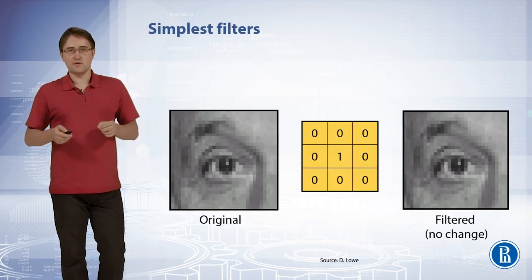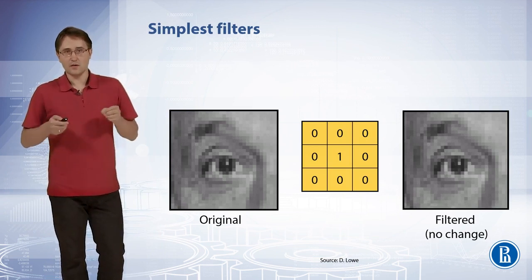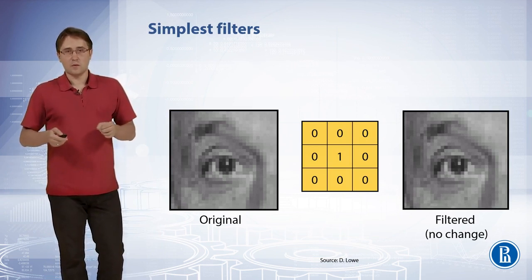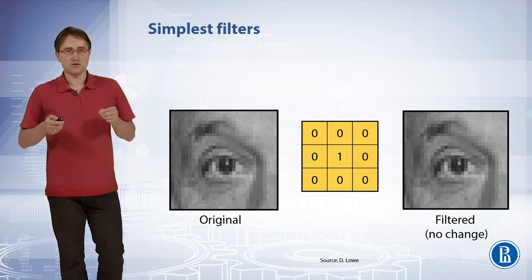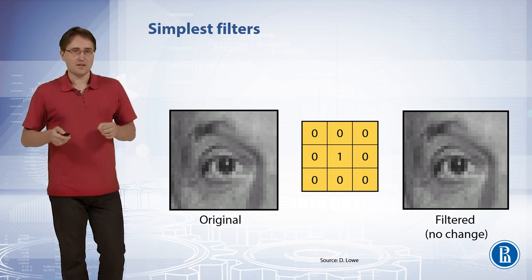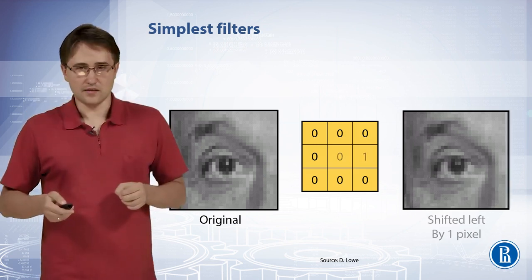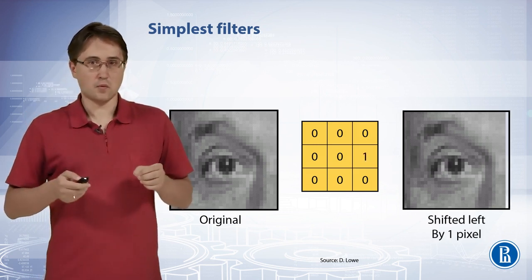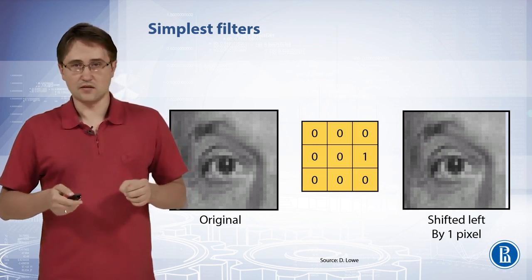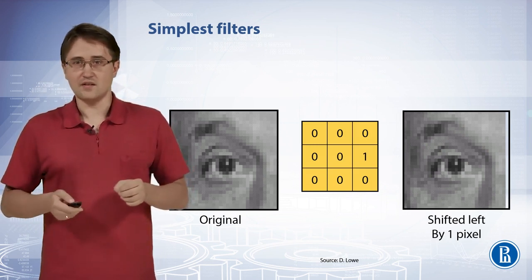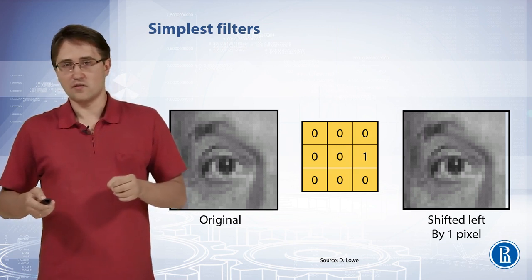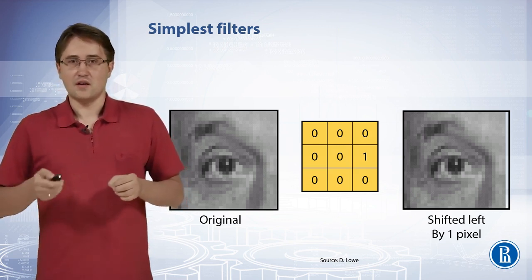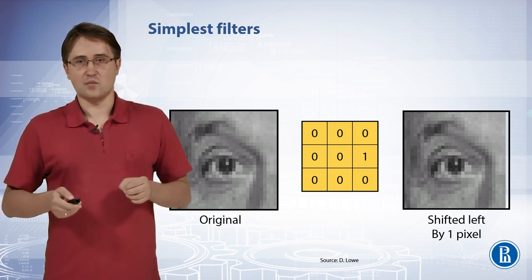The simplest filter is the identity filter, where only one weight in the center of the filter kernel equals 1 and all other weights equal 0. Applying this filter kernel for image convolution will result in no change in the filtered image. But if we move the single 1 from the center of the kernel to another place, then the image after convolution will change – it will be shifted. In this case, it will be shifted left by one pixel.